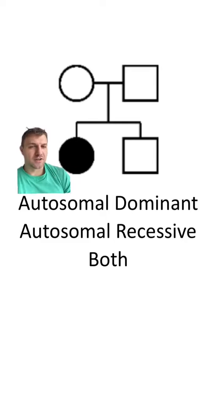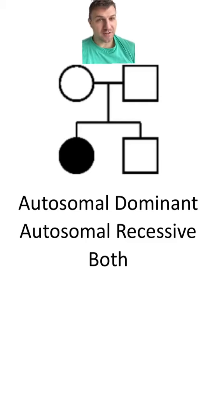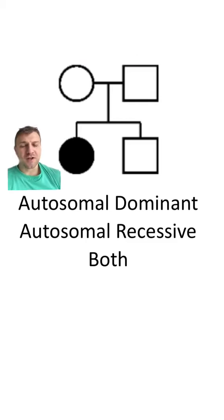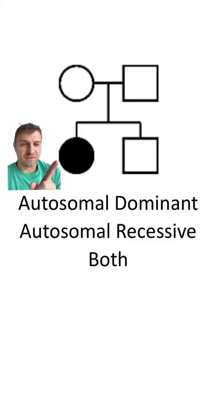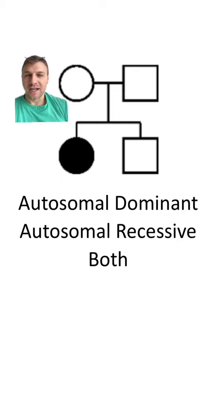That's because the daughter here is going to be little a little a, and the parents are going to be heterozygous or carriers. If this was an autosomal dominant disorder, this individual would have to have at least one big A that they got from their parents. And since neither parent has the disorder, it can't be an autosomal dominant disorder.